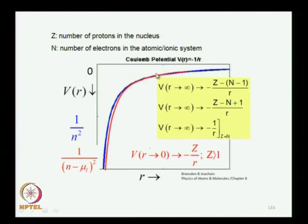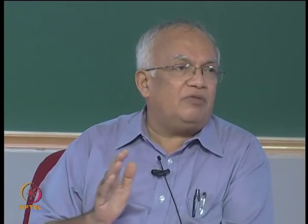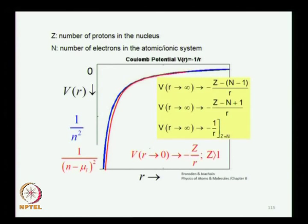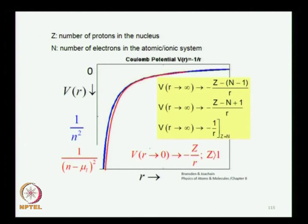Looking at the potential curve: the blue curve is the hydrogen atom −1/r potential. The red curve is the potential seen by an electron in a multi-electron atom, which goes to 0 as −Z/r at small r, falling below the blue line. This means the potential in other atoms is not strictly −1/r throughout all of space, and the isospin-like SO4 symmetry is broken for these atoms. The potential matches 1/r only in the asymptotic region.